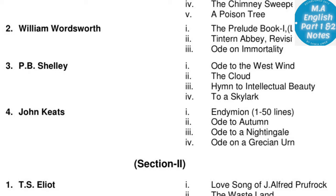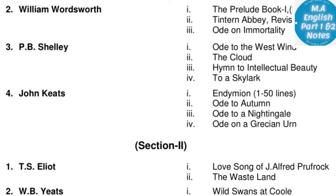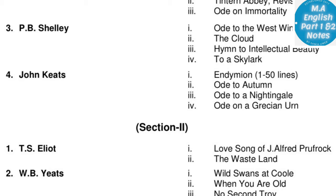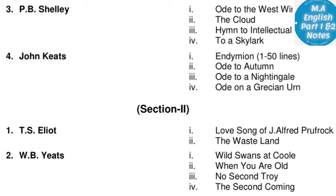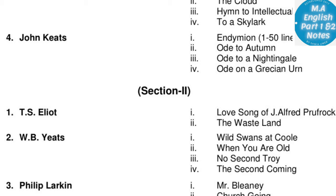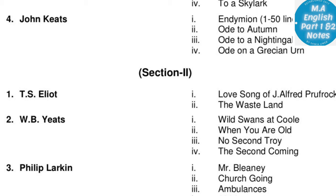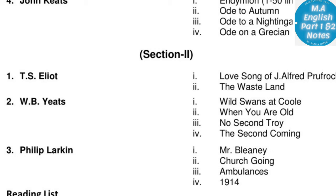P.B. Shelley: Ode to the West Wind, The Cloud, Hymn to Intellectual Beauty, To a Skylark — all included. John Keats is the last poet of Section One: Endymion lines 1-50, Ode to Autumn, Ode to a Nightingale, Ode on a Grecian Urn — all odes included. Section Two: T.S. Eliot is the first poet — The Love Song of J. Alfred Prufrock and The Wasteland.